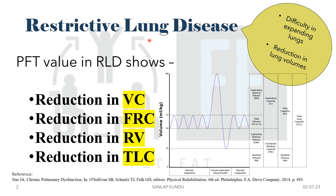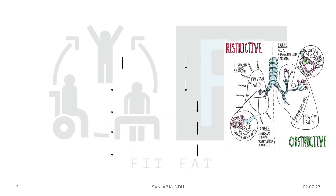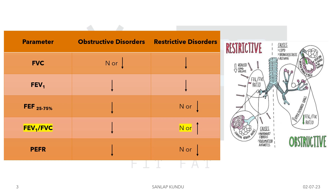All of these volumes basically decrease in case of restrictive lung disease because the lung is unable to expand properly. Now we will see the basic differences between obstructive and restrictive disorders on these parameters. In case of FVC, in obstructive disorders it may be either normal or decreased, but in restrictive it will always decrease. Similarly, in FEV1 both cases the value will decrease. The most important one is the FEV1/FVC ratio — in obstructive disorder this value will always decrease. In mild COPD, FEV1/FVC will be less than 70% and FEV1 value is greater than or equal to 81% of the predicted value.